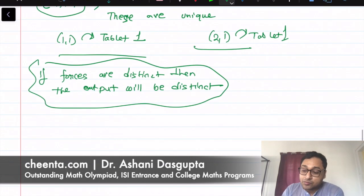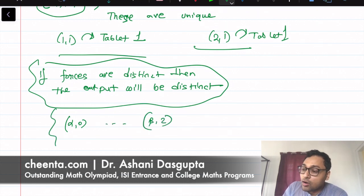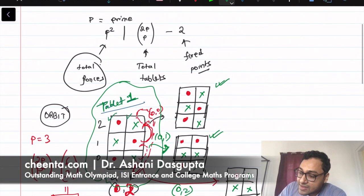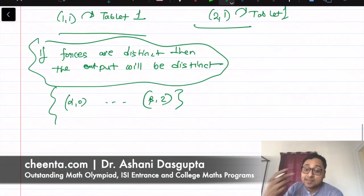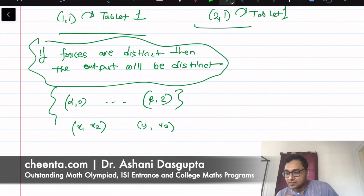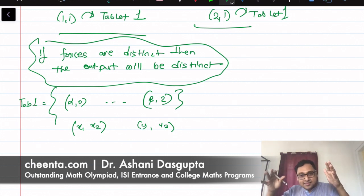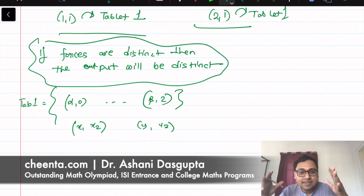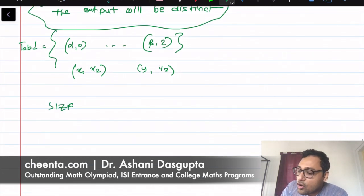To prove it, you start with slots alpha,0 through beta,2, use two forces — say force one is (x1,x2) and force two is (y1,y2) — they are different, and you show the outputs must be different. So for nine forces we have nine different tablets in the orbit. The size of an orbit is equal to the number of forces.